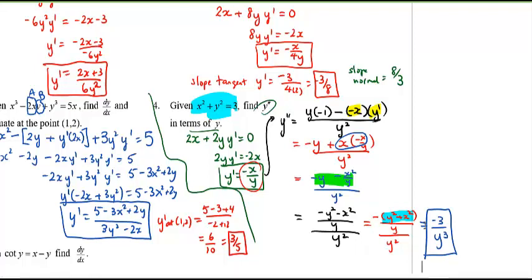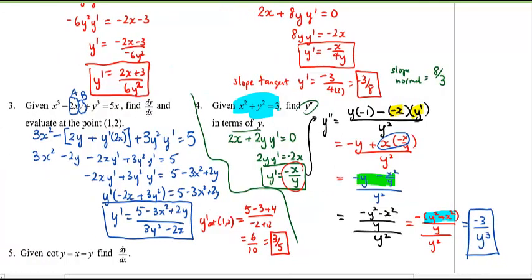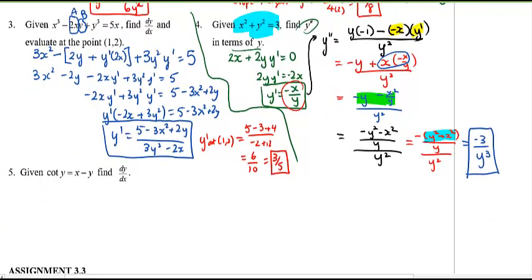One last one to try. Given that you have cotangent, oh those trig derivatives. What is the derivative of cotangent? If you said negative, remember, c's are always negative, cosecant squared y, you are almost right. What did I forget? That's right, an extra y prime.